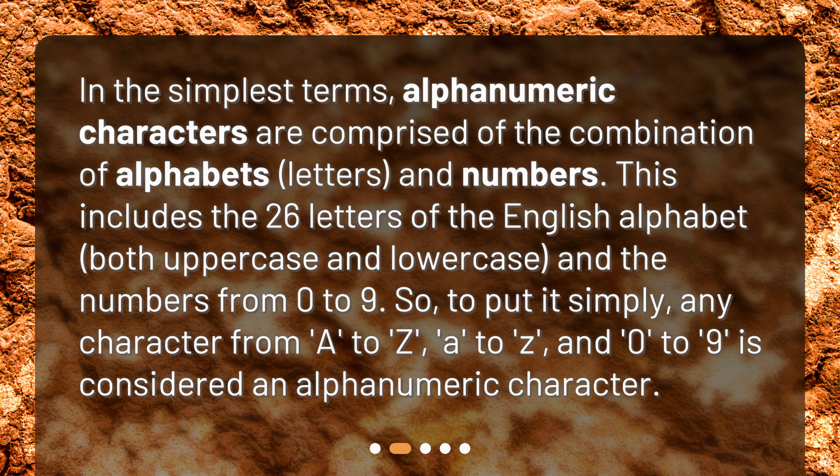So, to put it simply, any character from A to Z, a to z, and 0 to 9 is considered an alphanumeric character.